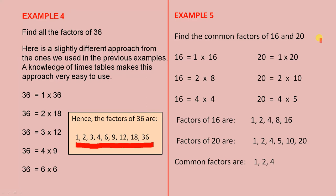Example 5: find the common factors of 16 and 20 — that is, what numbers go into both 16 and 20 evenly. Looking at 16: it can be expressed as 1 times 16, 2 times 8, or 4 times 4. This helps us find the factors of 16: 1, 2, 4, 8, and 16. Don't forget, 1 and 16 are always factors, and this working helped us find the other three.